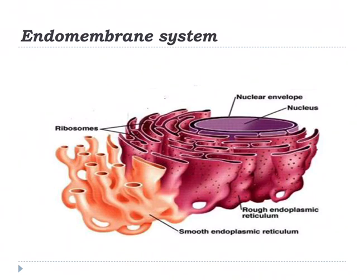The endomembrane system is classified into two types: the rough endoplasmic reticulum and the smooth endoplasmic reticulum. There are structural differences between them and many different properties. The rough endoplasmic reticulum and smooth endoplasmic reticulum can be seen in this figure.